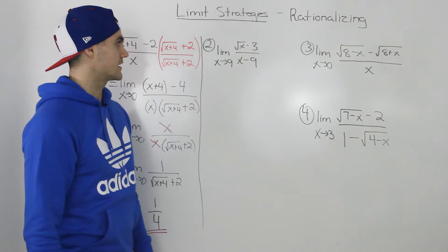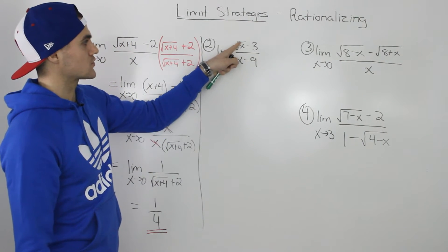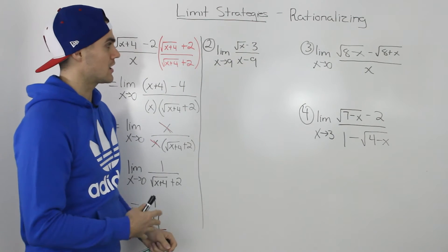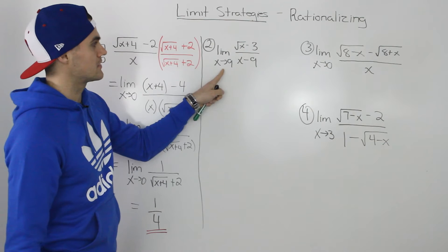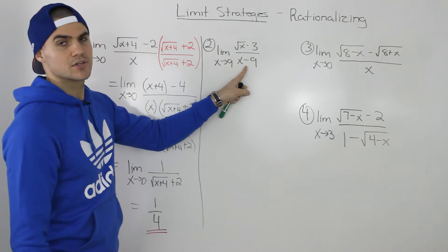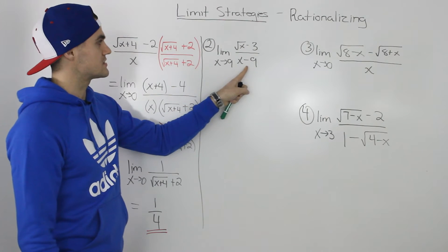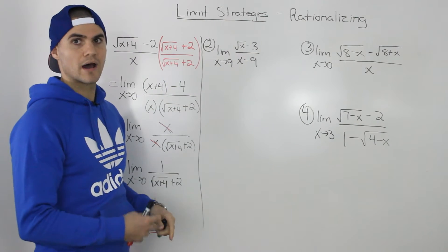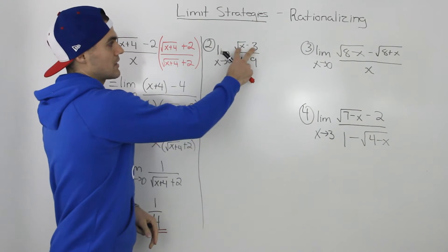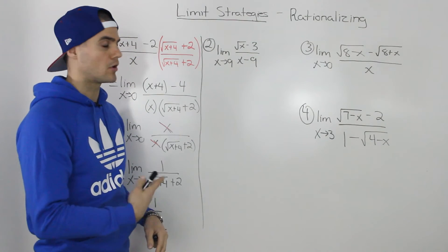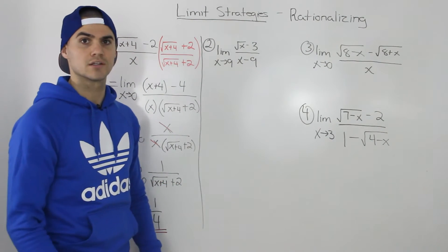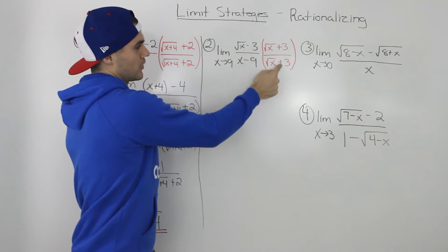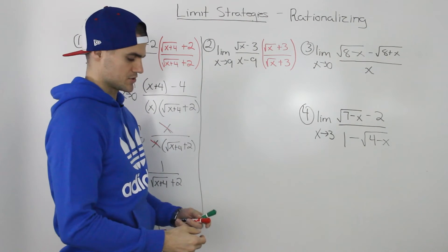Moving on to the second example: the limit as x goes to 9 of the square root of x minus 3, all over x minus 9. First thing we check — direct substitution. We can't substitute 9 because the denominator will be 0. So let's try to get rid of the radical in the numerator by rationalizing. It's a two-term radical, so we multiply it by its conjugate — the conjugate over the conjugate — so it's like multiplying by 1.